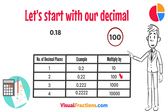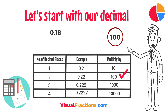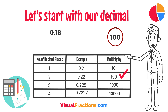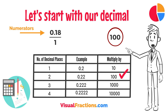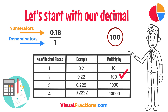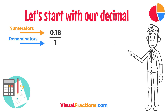This places it in the hundredths position. To convert this decimal into a fraction, you initially put it over one, essentially treating the decimal as the numerator in a fraction where the denominator is one. This sets up the conversion process.